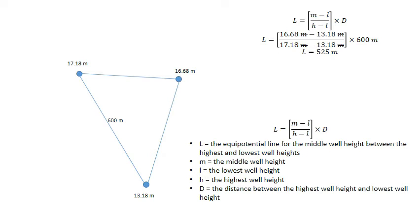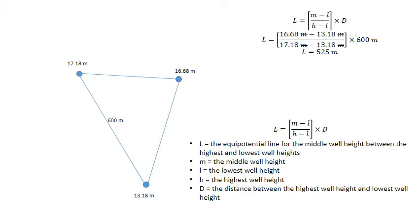To measure that, we need to measure from the lowest well height towards the highest well height — so we measure 525 metres in that direction. And that's where it comes out, so it's 525 metres from the lowest well height towards the highest well height.